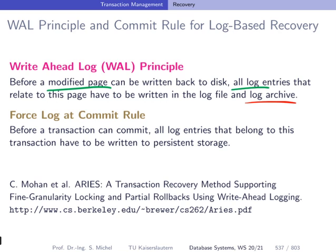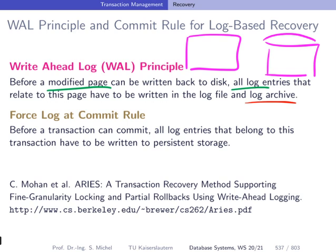Why is this important? Let's assume we have our buffer in memory and our disk, and there is one page — let's call it page A — and there is a modification to this page: an entry is changed from A to A+1 inside this page. Now let's assume this page gets written to disk because the buffer is full and this page gets replaced. Since we allow steal in our configuration, this can happen, and the page now has the changed value — let's call it A'.